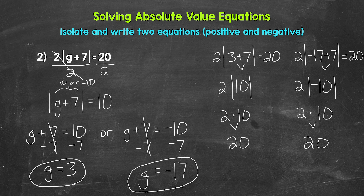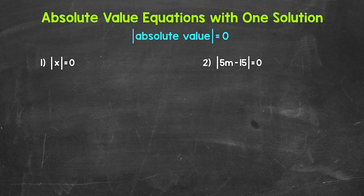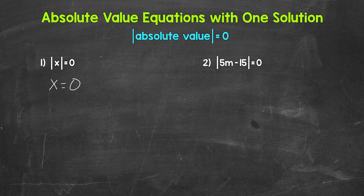There's our two-solution section. Let's move on to some examples with one solution. Here's our section on absolute value equations with one solution. Let's jump into number 1 where we have the absolute value of x equals 0. Remember, the absolute value of a number is its distance from 0. So what does x have to equal here? 0. There's only one possibility, one solution: x equals 0.